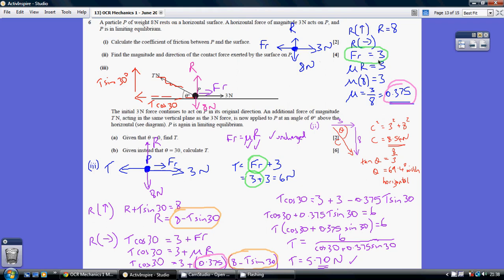So what do we know about the friction? Friction is mu R equaling 3. We've just worked out that the normal reaction is 8. So our coefficient of friction is 3 over 8, or 0.375.